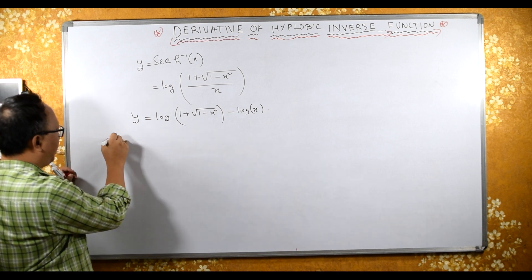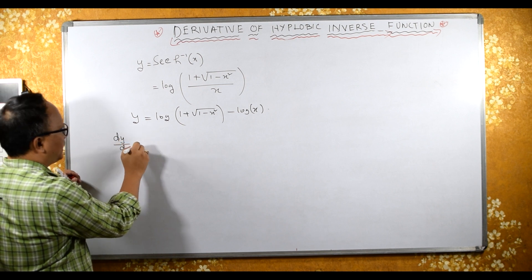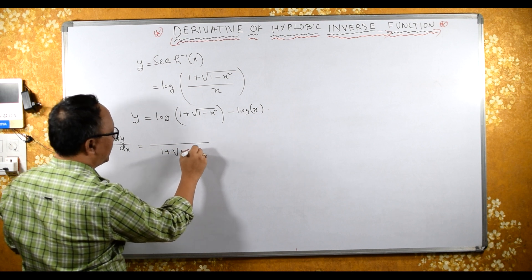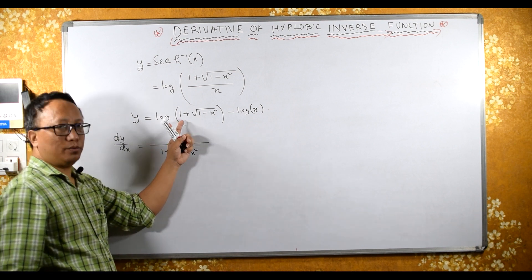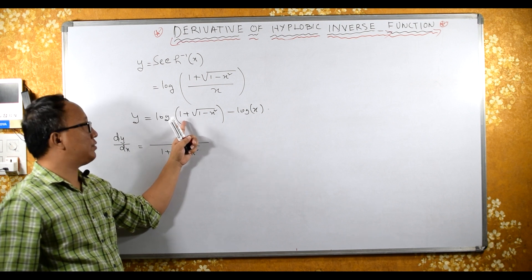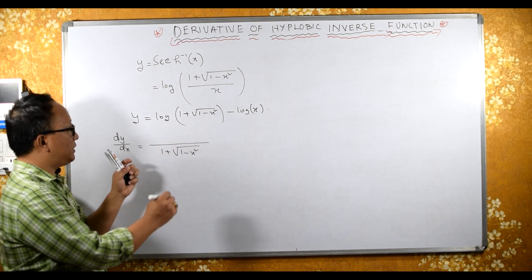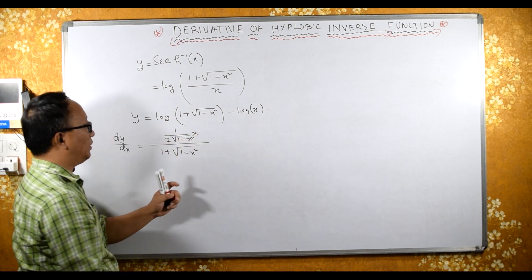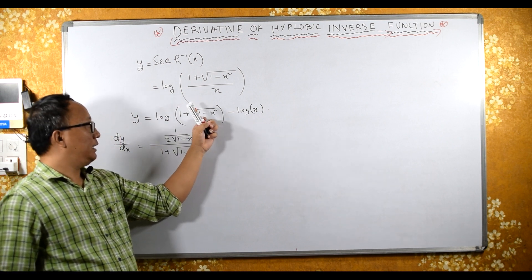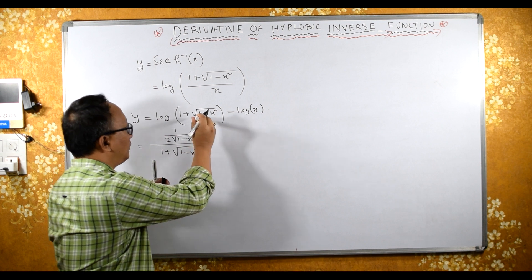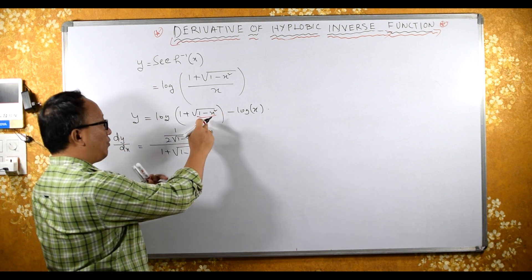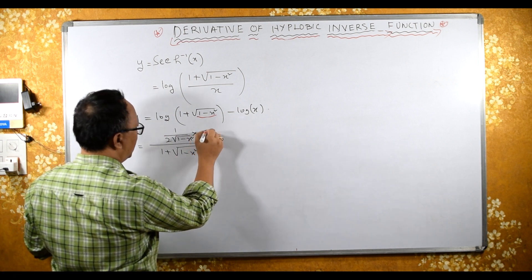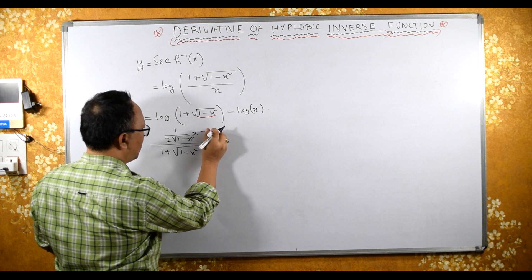Now differentiating with respect to x, dy/dx equals: since log is there, we have 1 over (1 plus square root of 1 minus x²), multiplied by the derivative of (1 plus square root of 1 minus x²). The derivative of 1 is 0, plus for the square root term: (1/2) times (1 over square root of 1 minus x²) times the derivative of (1 minus x²), which is 0 minus 2x, giving minus 2x.